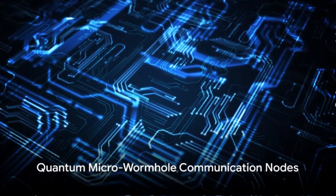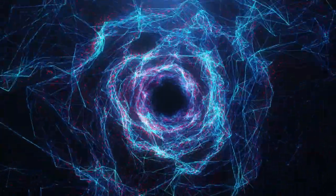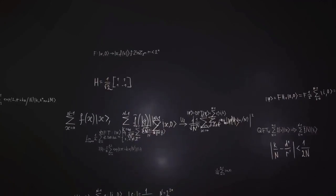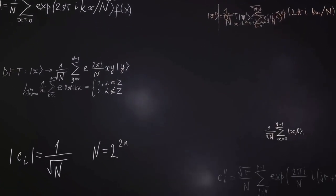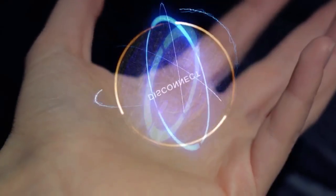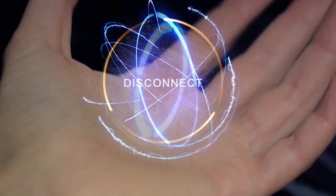Next, we have the Quantum Micro Wormhole Communication Nodes. These are the actual points of communication. They are created and stabilized using quantum algorithms, a set of rules to be followed in calculations or problem-solving operations. Once established, communication between nodes is facilitated by quantum communication protocols designed for efficient information exchange.